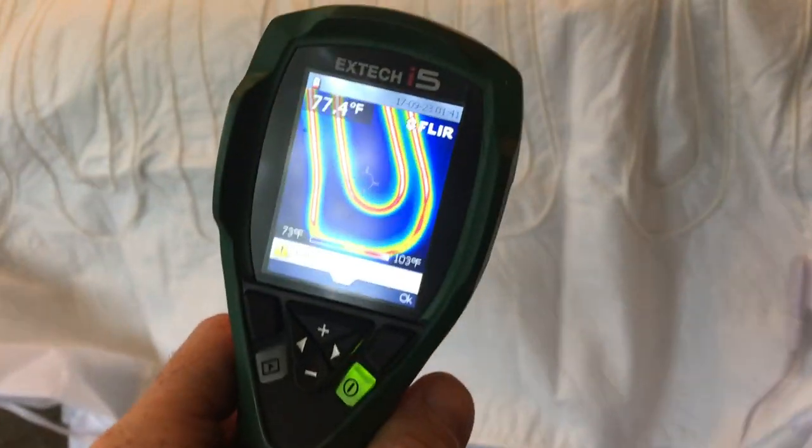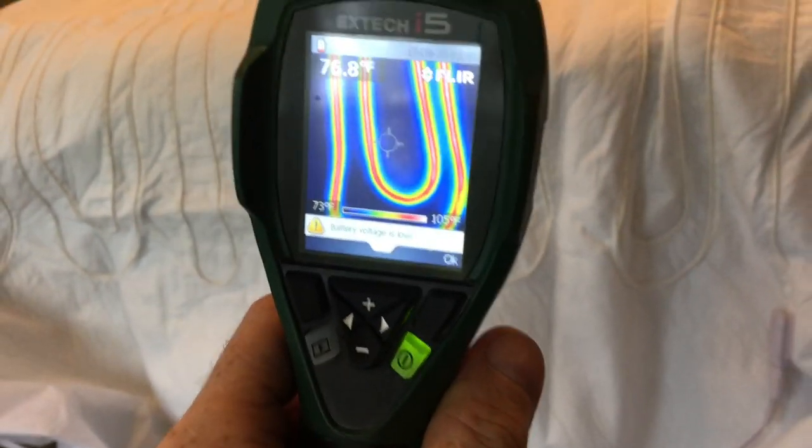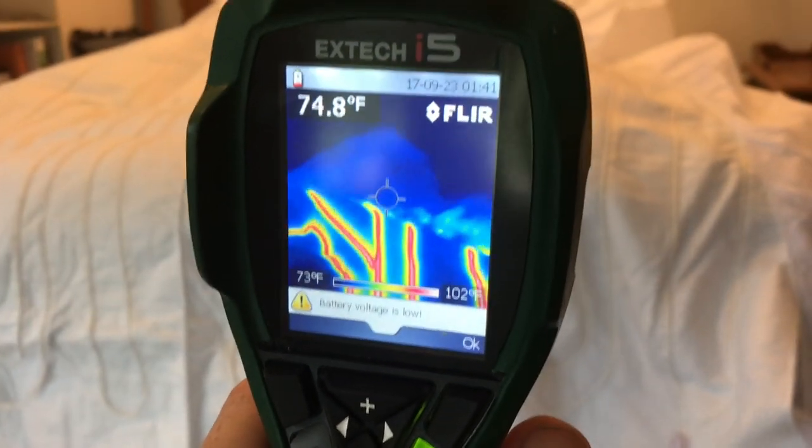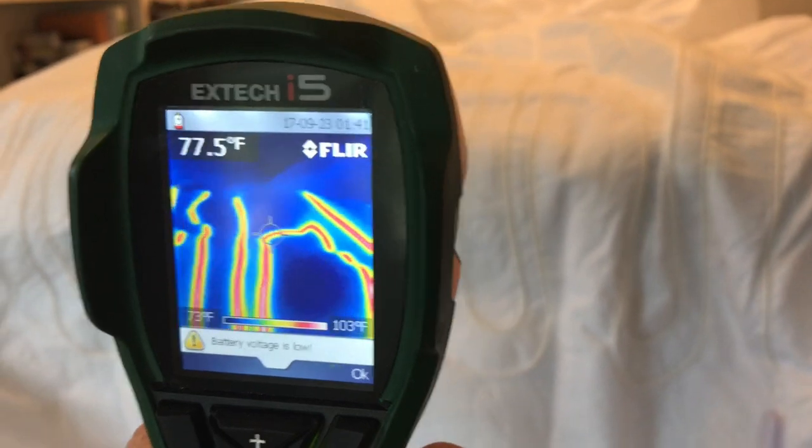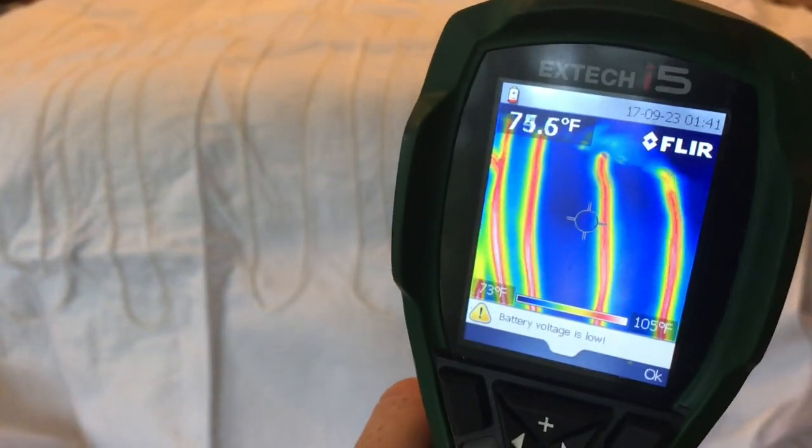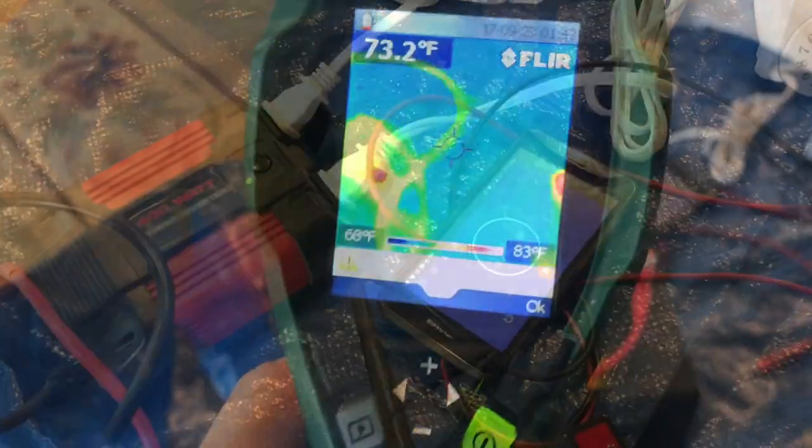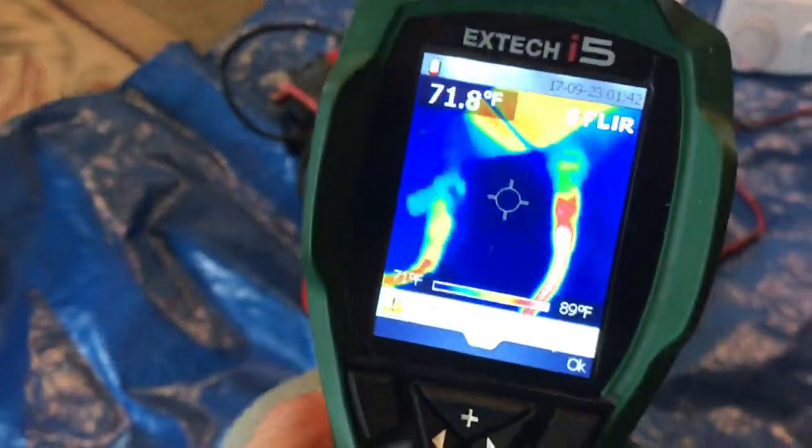So it's holding temperature at about 80 degrees. Now I've got both sides of this blanket set to high. One's actually set to high at 10 and the other one's at 9. If I would have seen the one was set at 9 I would have set it to 10, but we'll just leave it for the rest of the test.